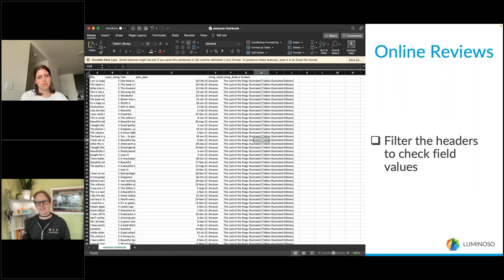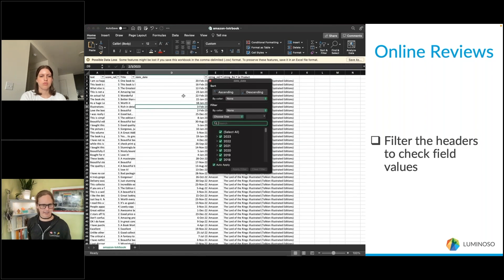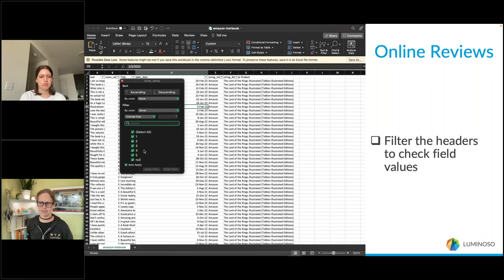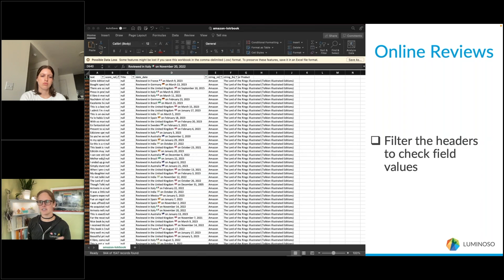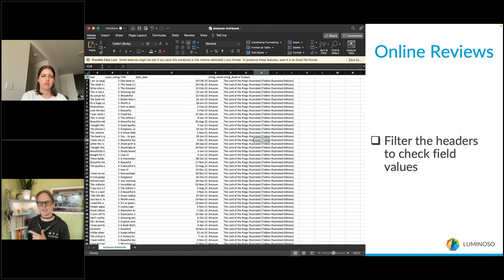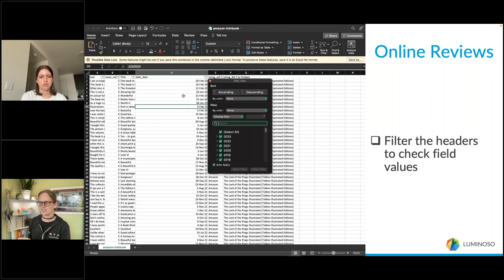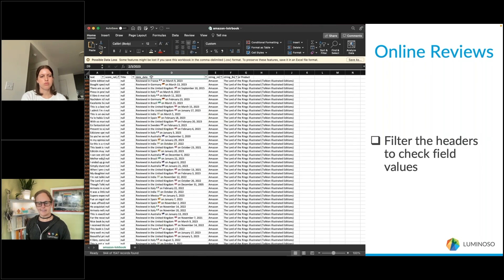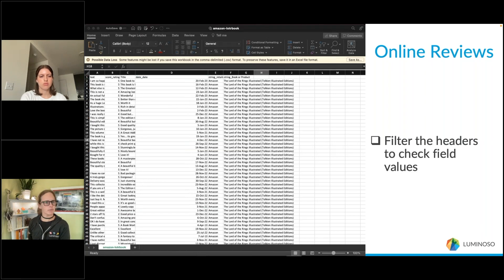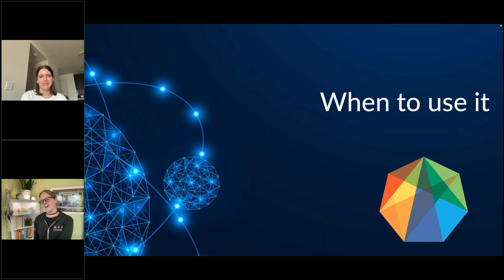Another important step is checking your data prior to upload. We frequently see issues from skipping QA and having to clean up files later. In this case we checked the score ratings and found many were not filled in — those tended to be international reviews. When we replaced the date field we removed the US prefix but not everything else. By checking, you can make an educated decision on whether to include those reviews in your analysis.